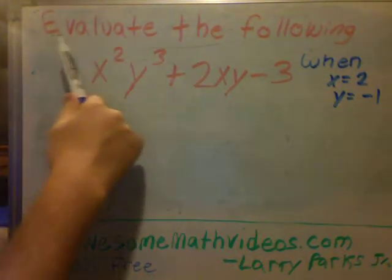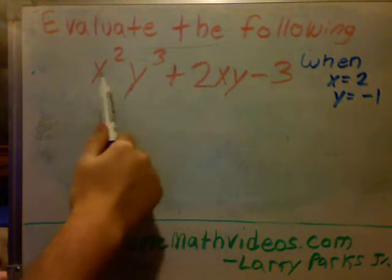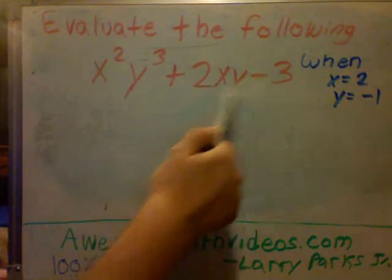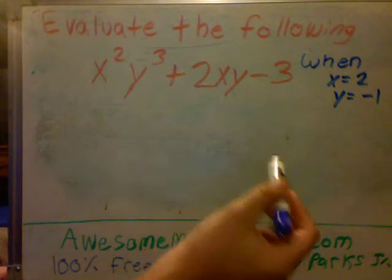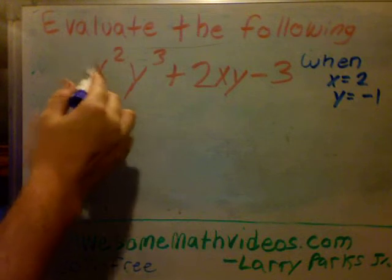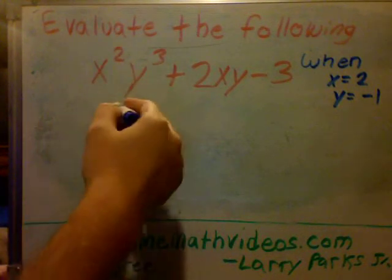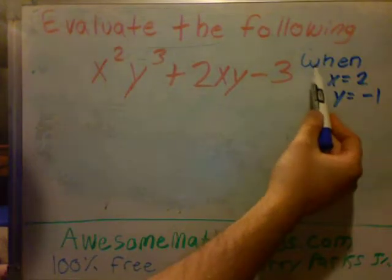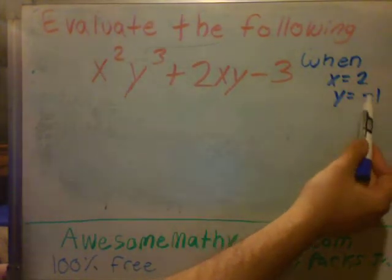The question is, evaluate the following when you're given x squared y to the third plus 2xy minus 3. Now, when you have a polynomial, basically x could be any value, y could be any value. But we're asking, well what happens when x equals 2 and y equals negative 1?